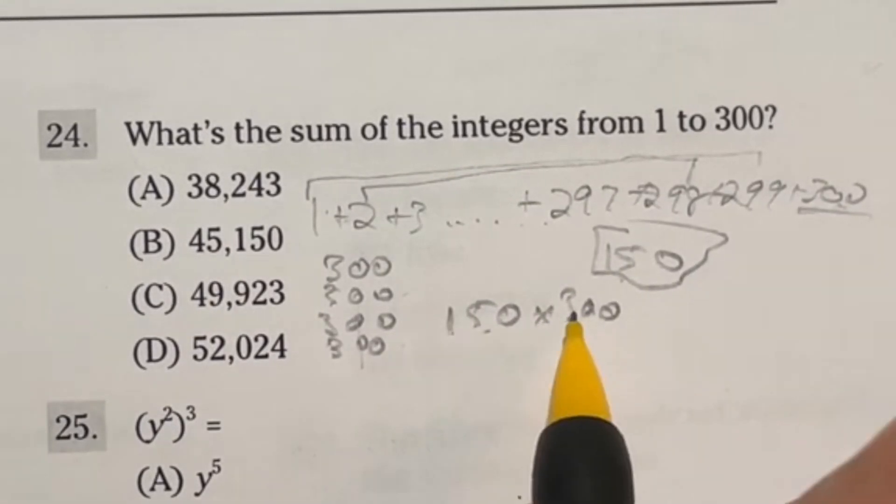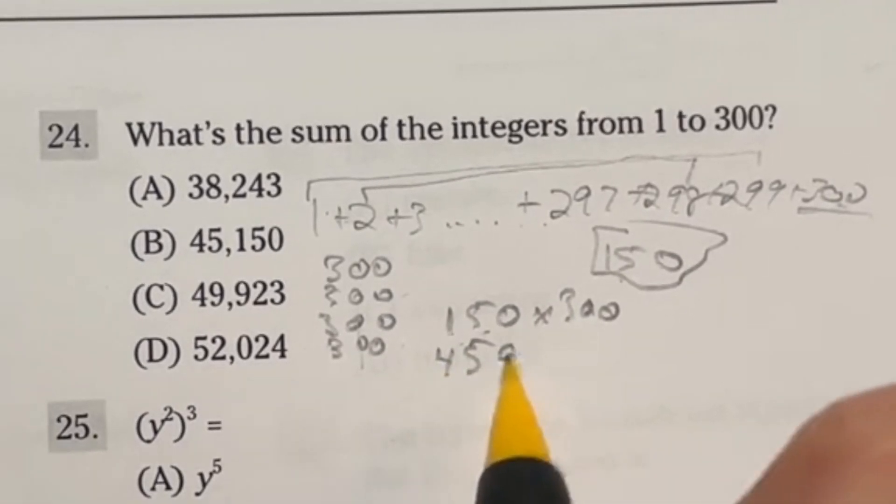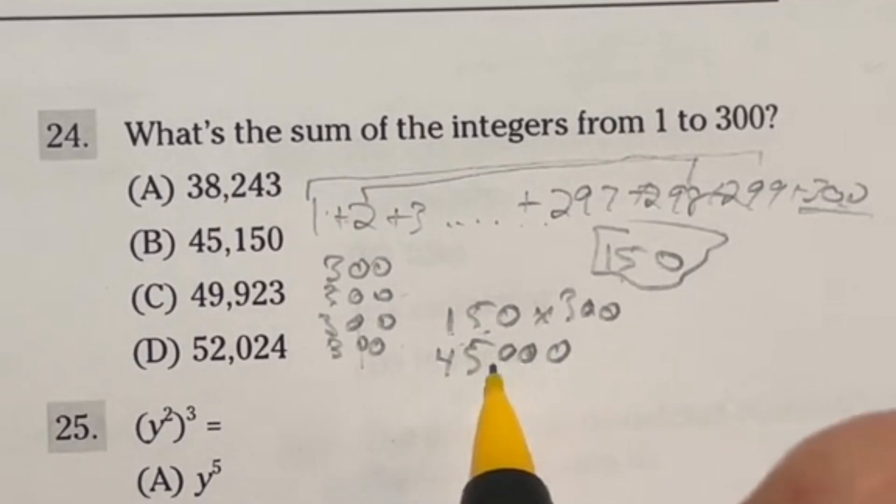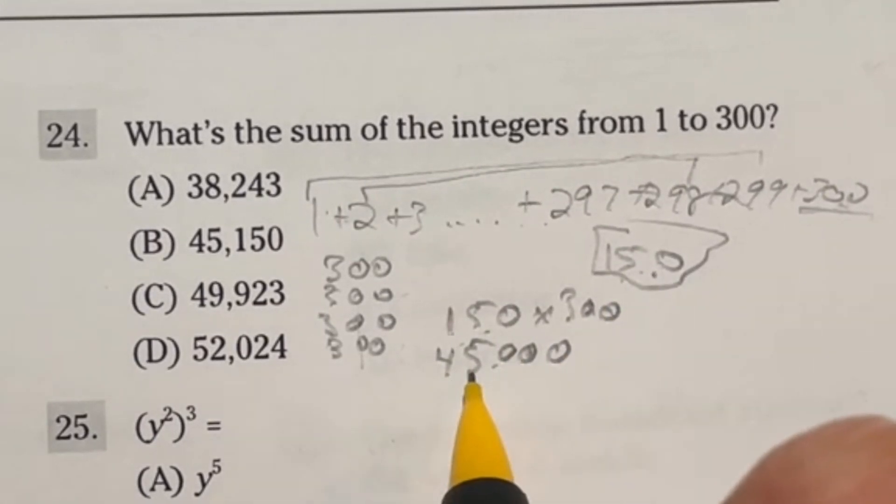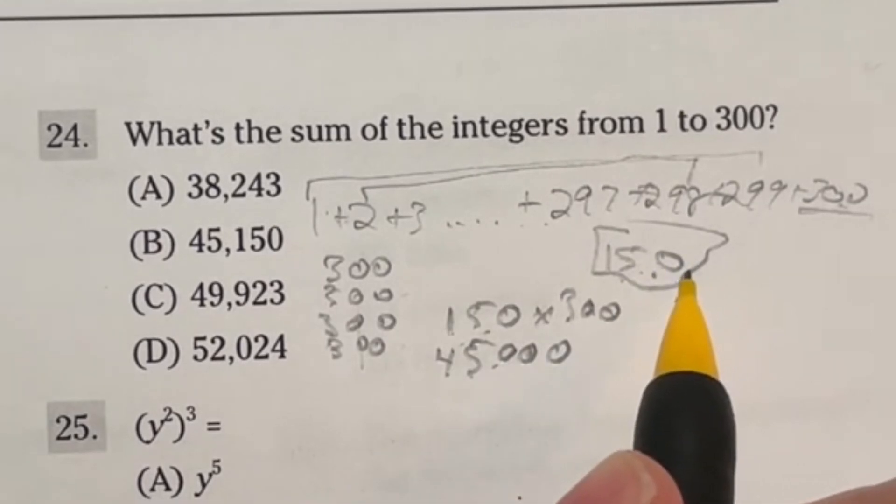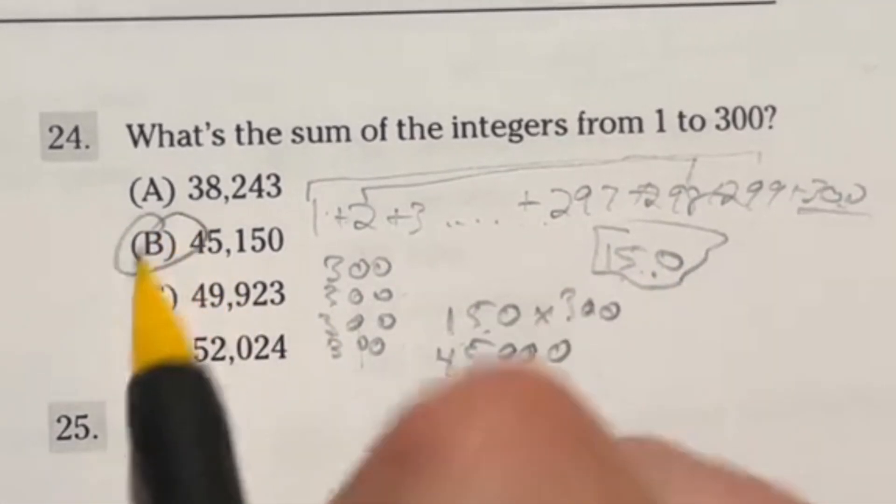So we have 150 of them times 300 because that's what we're going to want 150 times. And if you do that, well, three times 15 is going to give me 45 with those three zeros. And then we can't forget this 150 that was in the middle. So we have 45,150, which is indeed one of our answers. And it's answer B.